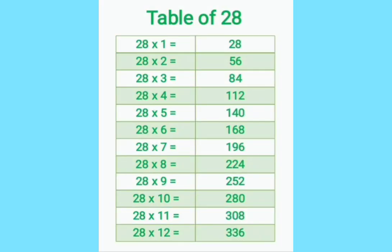28 ones are 28. 28 twos are 56. 28 threes are 84. 28 fours are 112. 28 fives are 140. 28 sixes are 168. 28 sevens are 196. 28 eights are 224. 28 nines are 252. 28 tens are 280. 28 elevens are 308. 28 twelves are 336.